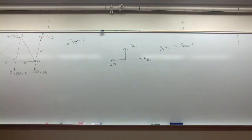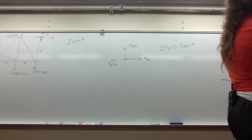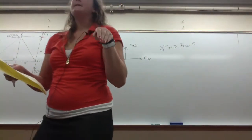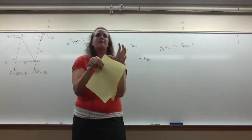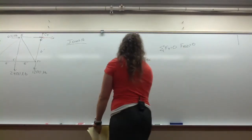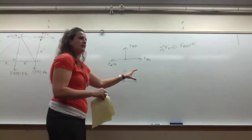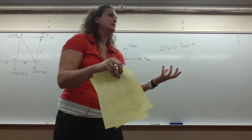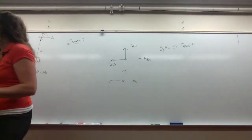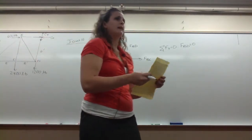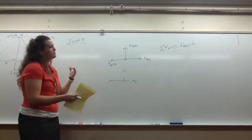Zero force members are designed to prevent buckling as loading conditions change. When you're building a truss, that load acting downward could be a car moving along the bridge. So member BD isn't always a zero force member — if there isn't a member there and the load moves, that's not going to end well. I will post the full worked-out solutions for both of these problems.